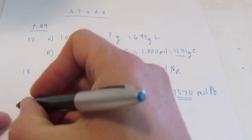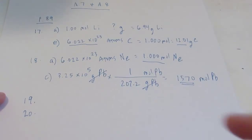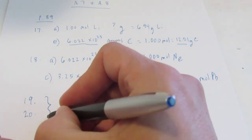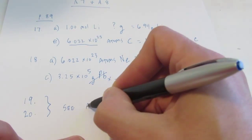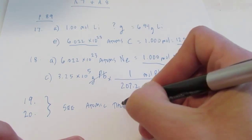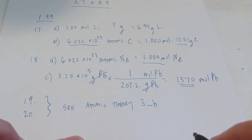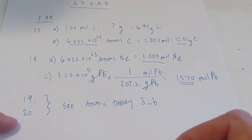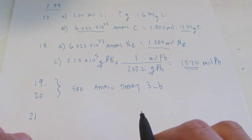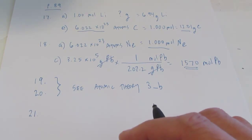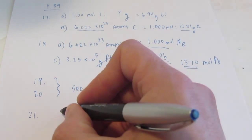Problems 19 and 20 I actually did by mistake on a previous video — see the atomic theory video, I think I called it 3_B. Those are average atomic mass problems. Then we'll hop down to number 21. Number 21 says, 'How many atoms are there in each of the following?'